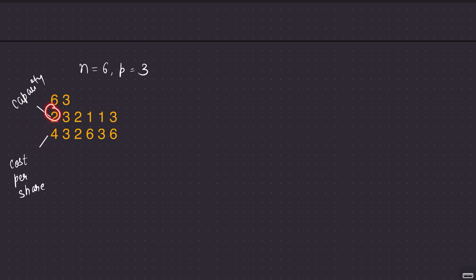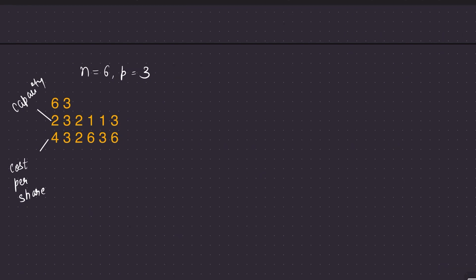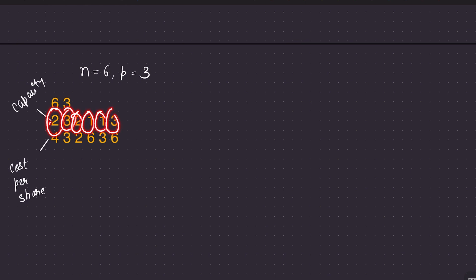This resident has to be announced first. For example, if this resident has the information, then he can announce to at most 3 other residents with a cost of 6 per announcement. So the question is pretty clear: the chief announces to some residents with a cost of P per share, and if a resident has that announcement, he has a capacity of at most how many residents he can inform, with the cost of each announcement.